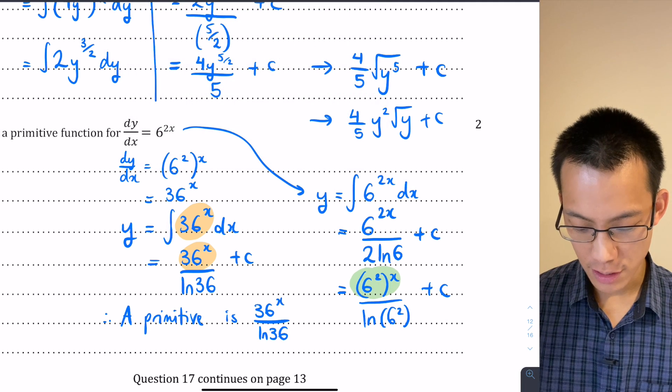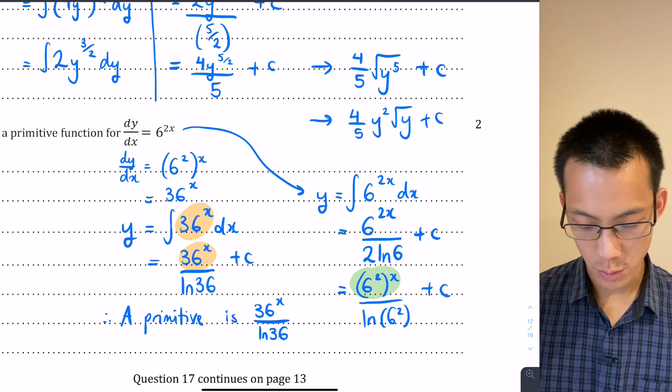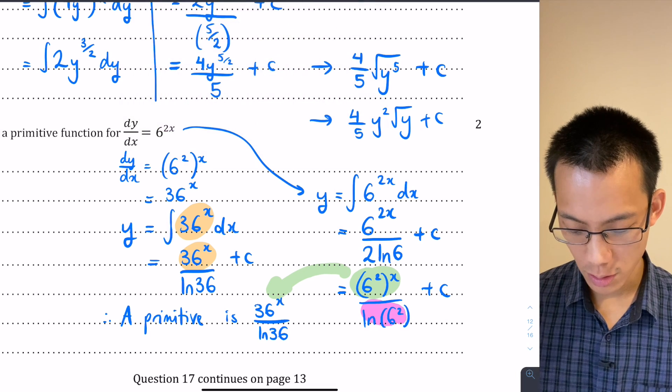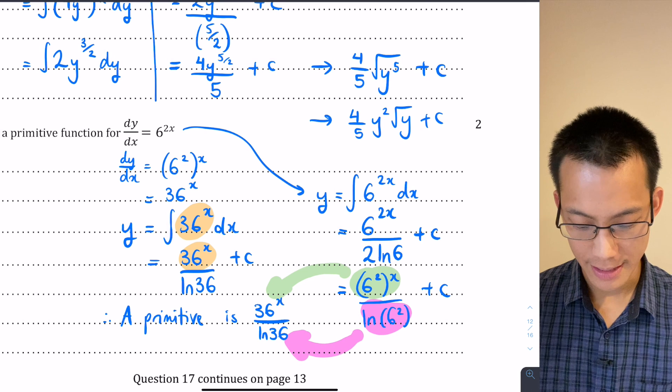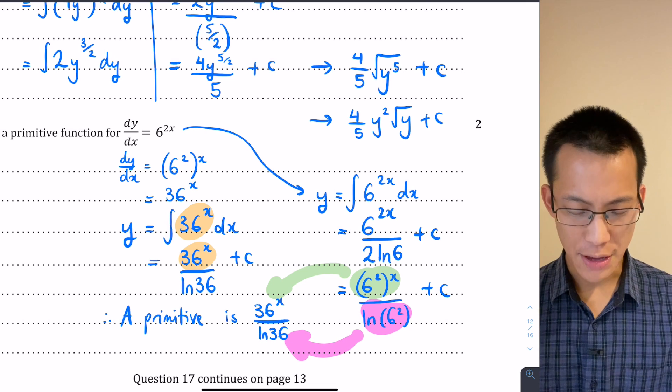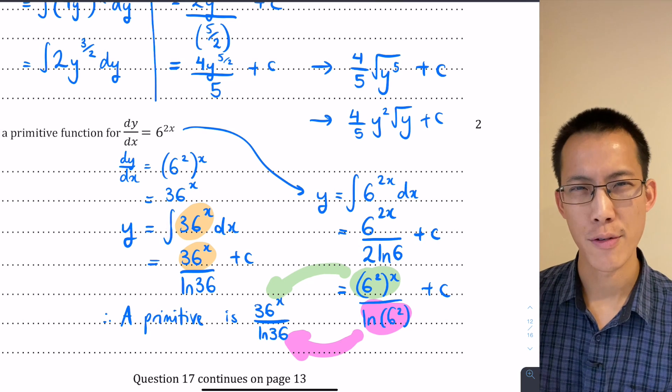And hopefully you can see in both cases you've got this 6² to the power of x which gives you this, and then you've got this log of 6² which is the same as this log of 36. So whichever way you went you got the same answer, but you might have found it easy if you didn't have to worry about reverse chain rule because a lot of people just frankly forgot when they were doing this question.